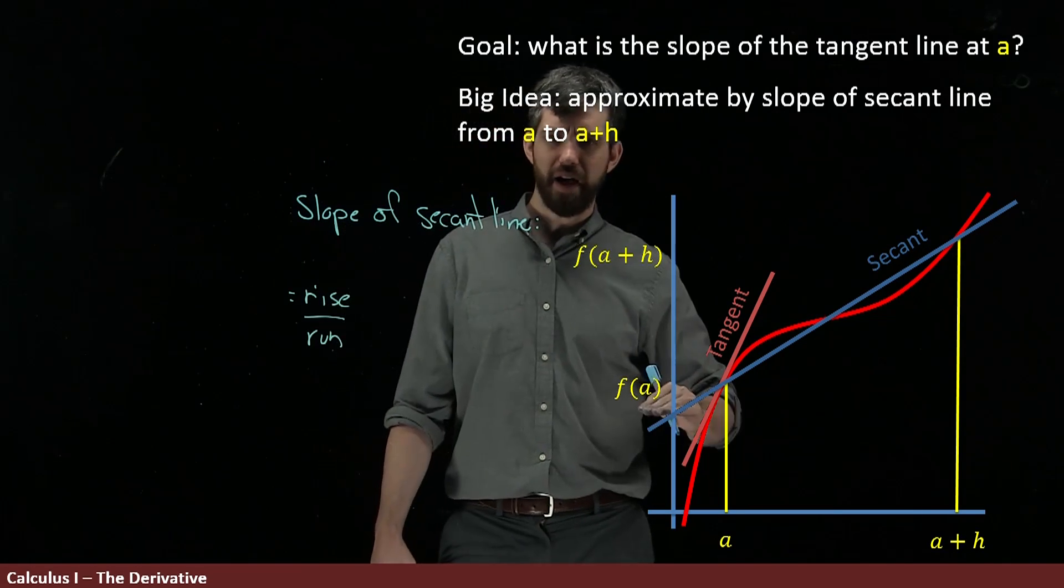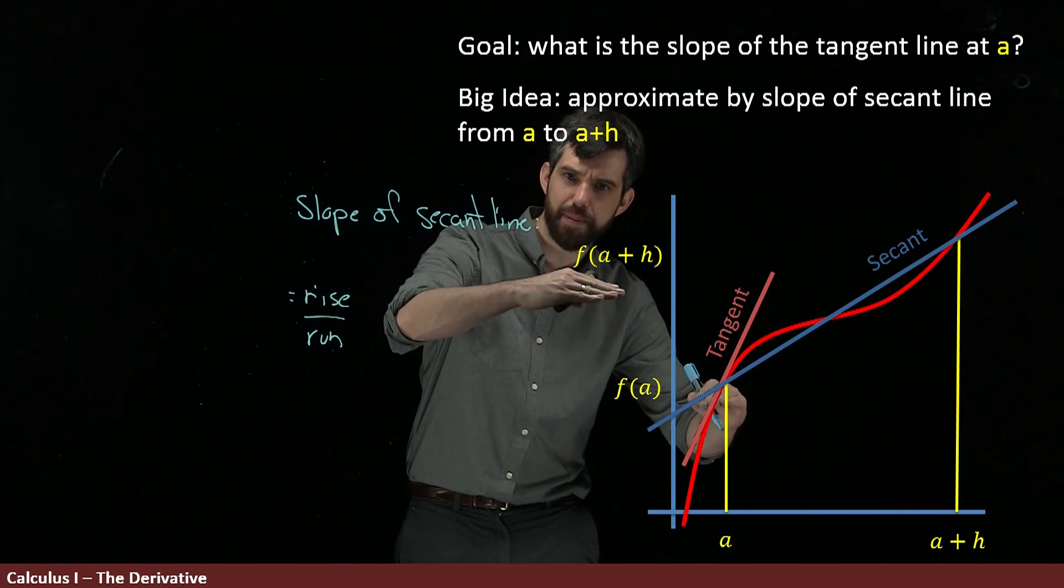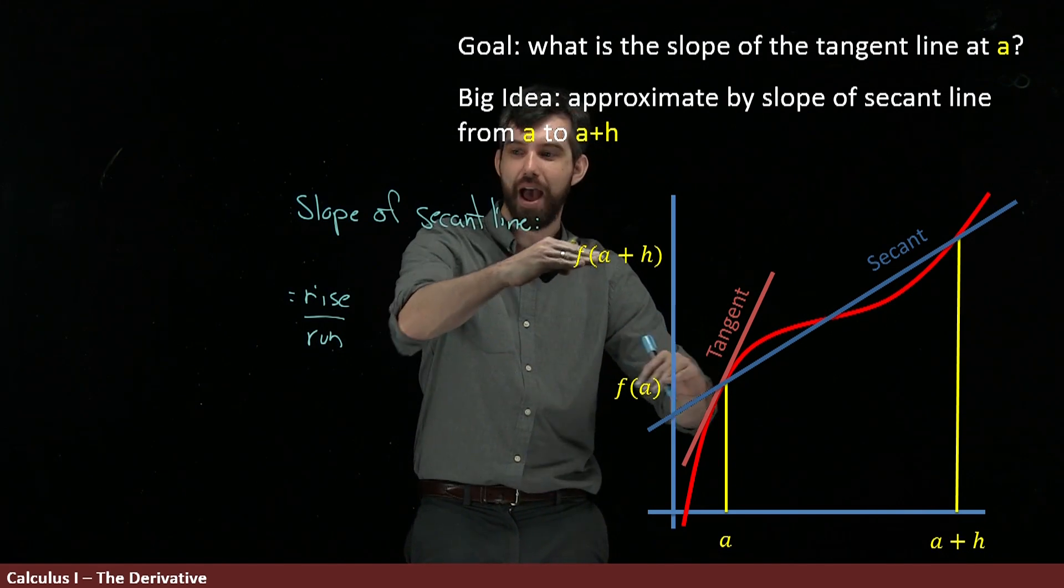Now, in my graph, I'm going from, at the bottom it's an f of a, and then I'm raising it up to this a plus h, this f of a plus h. So f of a up to f of a plus h.